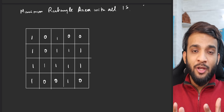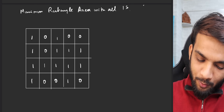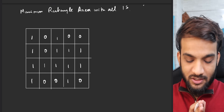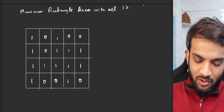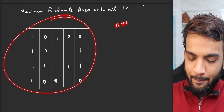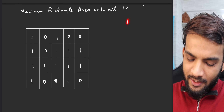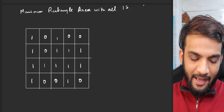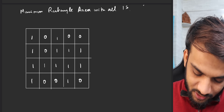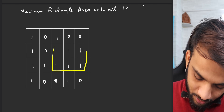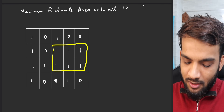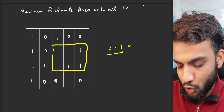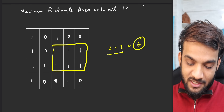Welcome back to Take You Forward. Today we will be solving this interesting problem: Maximum Rectangle Area with All Ones. You'll be given an N×M matrix filled with ones and zeros. We need to figure out the maximum rectangle — for example, this rectangle here has a length of two and breadth of three, which is an area of six.